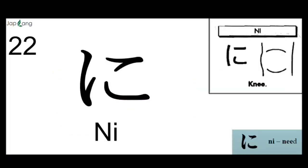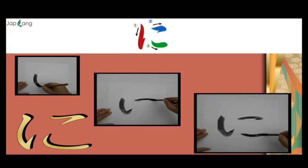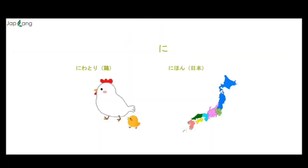Next is NI. We have two strokes for NI. You can relate with the knee — the leg knee — and the sound NI as in NEED. This is how we write NI: first stroke in red, second in blue, third in green. NI as in Niwa-tori, or NI as in Nihon — that is Japan.